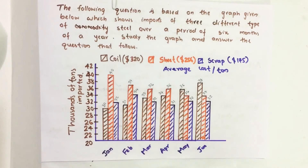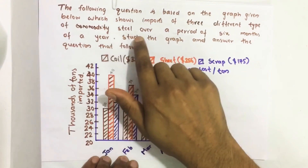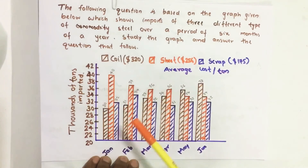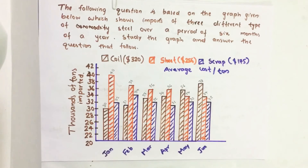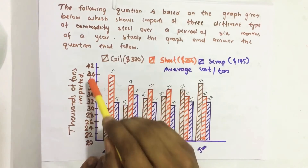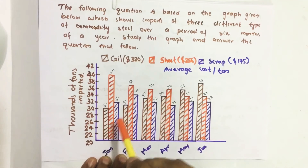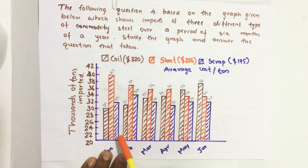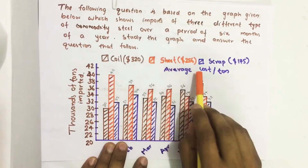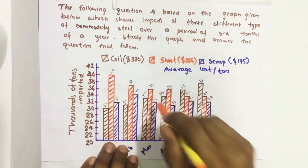Here I am going to solve 2018 CSAT questions number 11, 12, and 13 based on the graph, which shows imports of three different types of steel over a period of six months. In the y-axis it shows different types of steel imported in thousands of tons, and in the x-axis it shows months. The gray color indicates coil steel, orange indicates sheet steel, and violet indicates scrap steel. The average cost per ton is given in brackets.